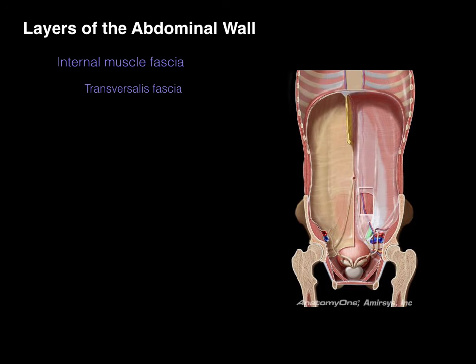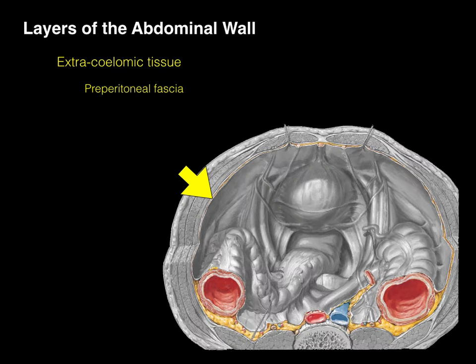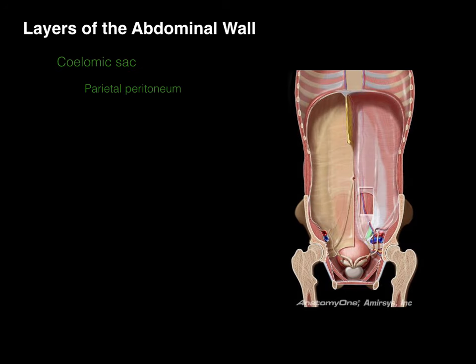The internal muscle fascia, or transversalis fascia, is the fascia outlined deep to the somite muscles — not to be confused with the transversalis aponeurosis. Transversalis fascia is the internal muscle fascial layer on the inside of the somite muscles. The preperitoneal fascia is the fascia deep to that, shown here in cross-section. The main point is that this is the fascia that anchors or attaches the parietal peritoneum to the body wall.